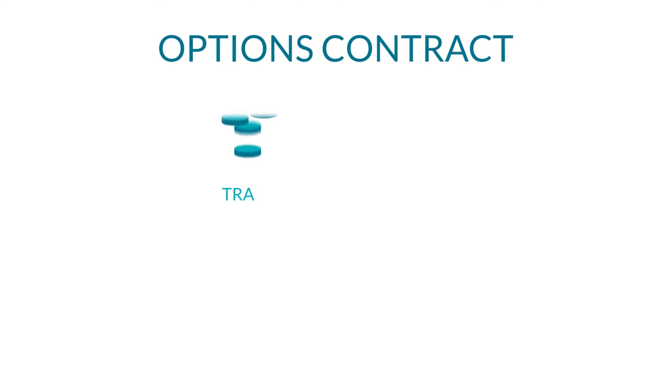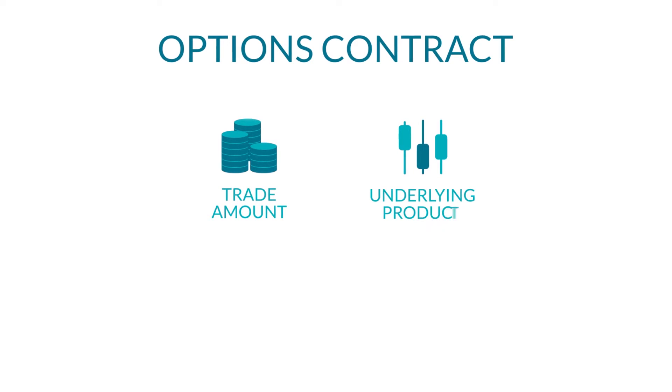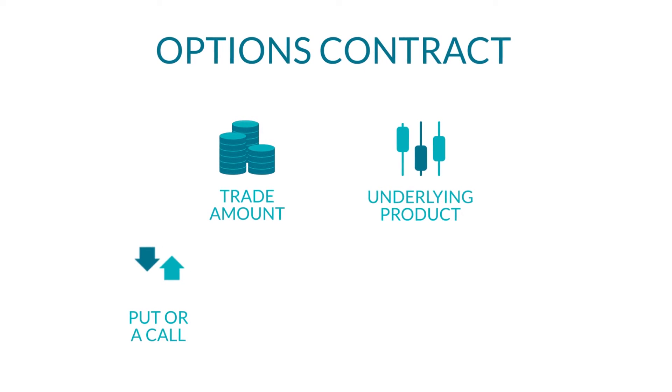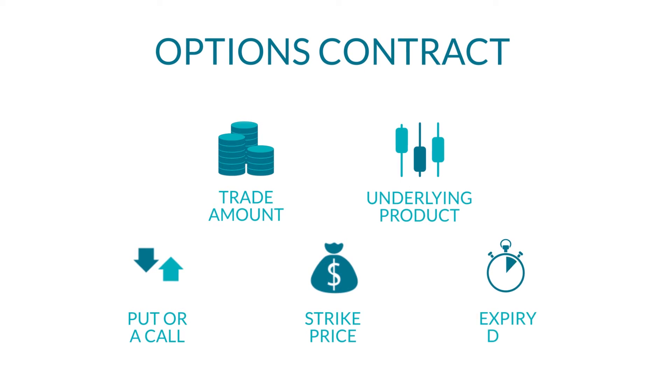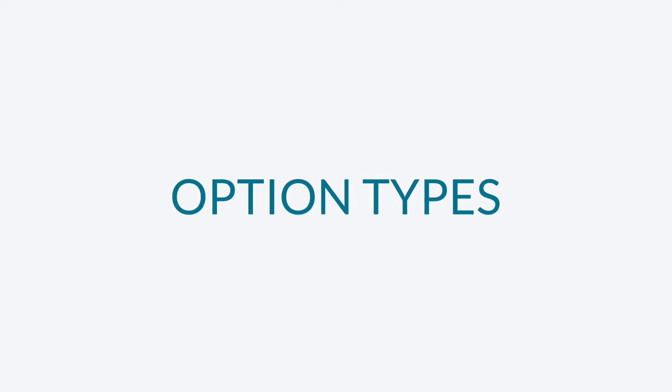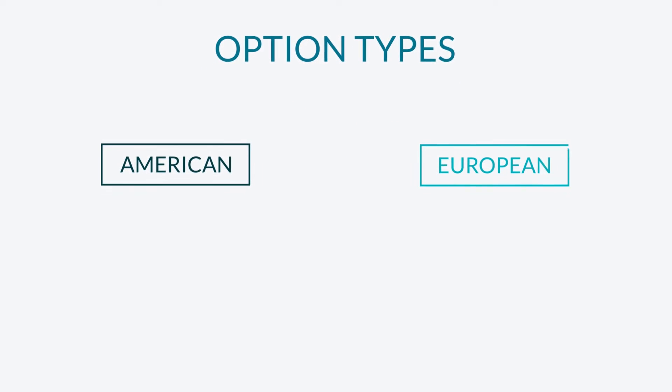When entering an option contract you need to define the following: the trade amount, underlying product, a put or a call, strike price and expiry date. Options can be traded in different styles with different methods of exercise — for example, American and European options.